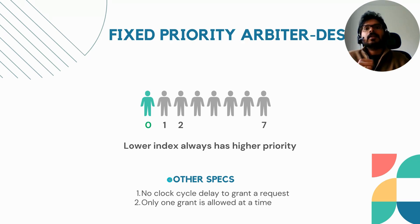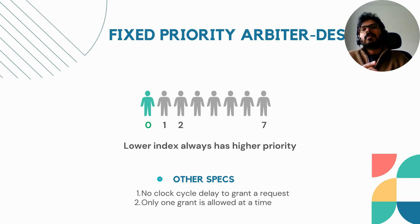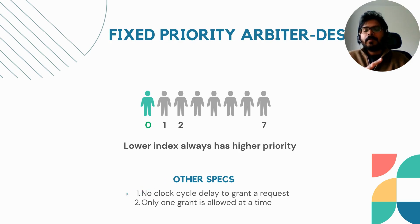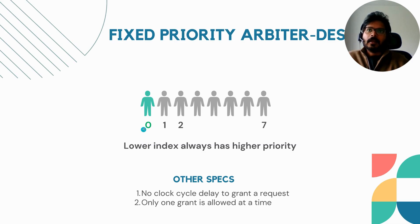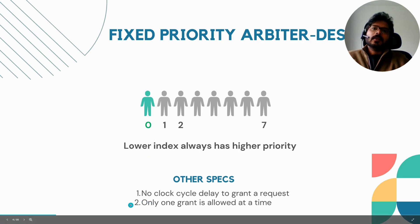Since there are different variants of fixed priority arbiters, here are some ground rules for this example. There is no clock cycle delay between a request and a grant — if requester zero is requesting, it can get a grant in the same cycle, though you will also see cases where it gets a grant in the next cycle. Additionally, you can have only one grant at maximum — you cannot have two grants in the same clock cycle.